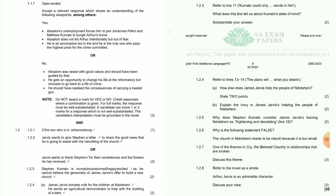Question 1.2.4: Refer to line 18 — 'And the plans will match what you desire.' How else does James Jovis help the people of the chain? James Jovis donates milk for the children at the chain; he sends an agricultural demonstrator to help with the building of a dam. Explain the irony: James Jovis has lived close to the chain his entire life without helping the people — it is only after his son's death that he understands their plight.